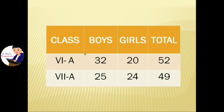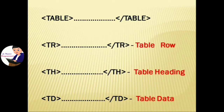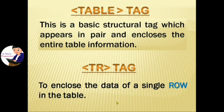Tables are created to present information or data in a comprehensive manner and make comparative analysis of data. To create a table in HTML we use the table tag, tr tag, th tag, and td tag. Within the table tag we can use tr, th, and td tags.